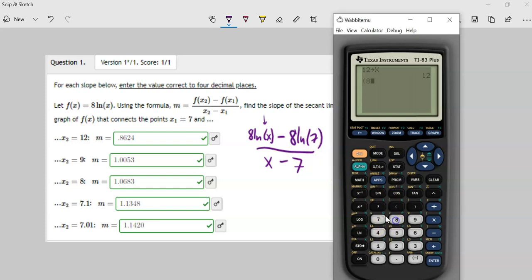It's going to be 8 natural log of x. Close off the parentheses for natural log. Minus 8 natural log of 7. Close off the parentheses for natural log. And I'm going to close off the parentheses for the numerator.